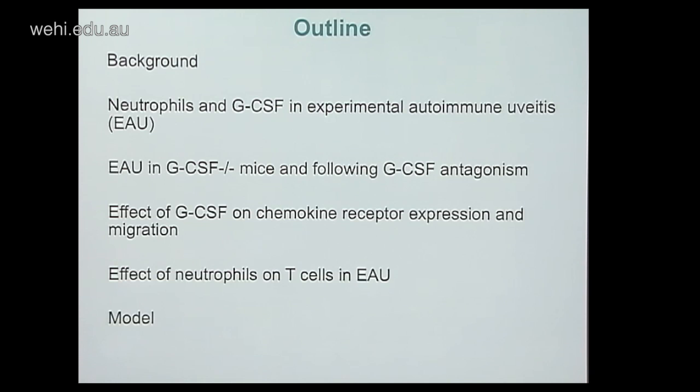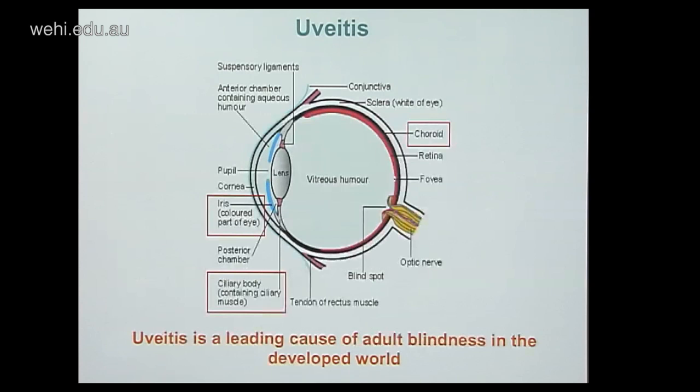First I'll give you some background about both uveitis and GCSF. I'll move on to neutrophils and GCSF in experimental autoimmune uveitis, which I'll refer to as EAU. We'll look at EAU following GCSF antagonism and in GCSF knockout mice, then the effects of GCSF on chemokine receptor expression and migration. The final part will cover effects of neutrophils on T cells in EAU, and then we'll propose a couple of models.